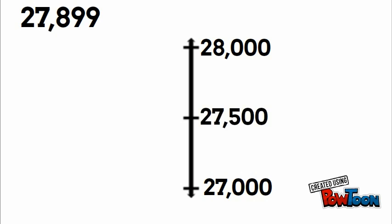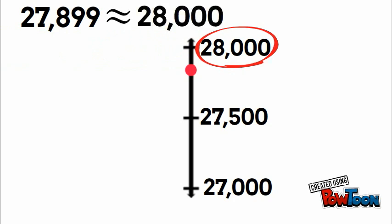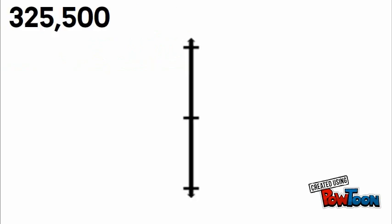We place a dot where twenty-seven thousand eight hundred ninety-nine would be — right about there. We see it's above our midpoint, so we round up to our upper estimate, which is twenty-eight thousand. Twenty-seven thousand eight hundred ninety-nine rounds to twenty-eight thousand.